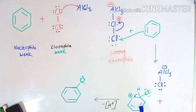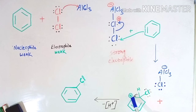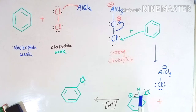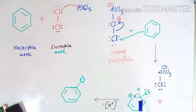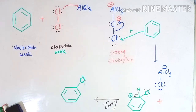This is AlCl4⁻, and this is the chlorine which attacks the benzene nucleus. As it attacks, the pi bond between carbon and carbon breaks and a carbon acquires a positive charge. To neutralize this carbocation, the bond between carbon and hydrogen breaks, and the electrons of that bond shift to form the carbon-carbon double bond. The proton separates out, and finally you get chlorobenzene.